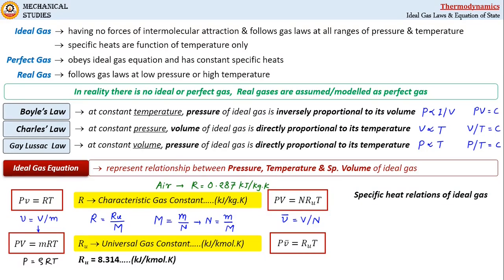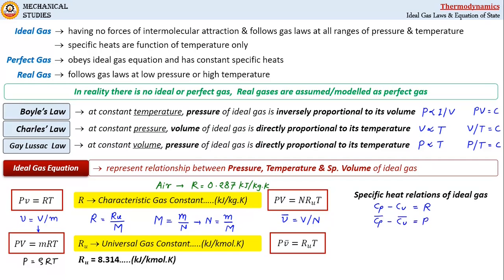Now, at the end, let me tell you the relationship between specific heats of an ideal gas. That relation is cp − cv = R, where cp is specific heat at constant pressure, cv is specific heat at constant volume, and R is the characteristic gas constant. On the basis of number of moles, you can write this expression as c-bar_p − c-bar_v = Ru, where c-bar_p and c-bar_v are molar specific heats of ideal gas and Ru is the universal gas constant.